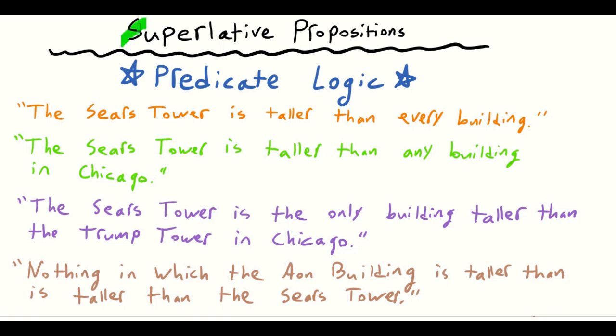We're going to be taking a look at superlative propositions in predicate logic. A superlative proposition has a relational predicate — it's a superlative. In other words, we have something that is larger than something else, or greater than something else, or heavier than something else. We're going to be working through several examples.